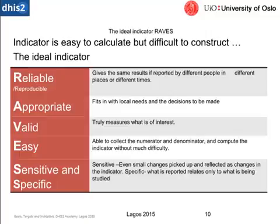Indicators are easy to calculate but difficult to construct. People spend their entire careers developing and building indicators, so I'm not going to go into all the specifics, and every indicator is very different. But we do know that all indicators should be reliable and reproducible — especially so we can share that information across sectors and across different organizations and make sure that number is reproducible as well as reliable. It should also be appropriate, meaning it fits in with local needs and decisions that need to be made.